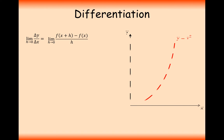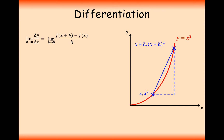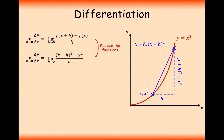This is the limit as h tends towards zero. Let's take the x squared curve, where the gradient changes all the way along the graph. We can now use the estimation for the gradient and substitute all the values in. So the limit as h tends to zero of f of x plus h minus f of x divided by h is going to be x plus h squared minus x squared, all over h.